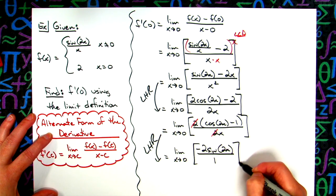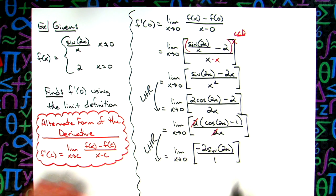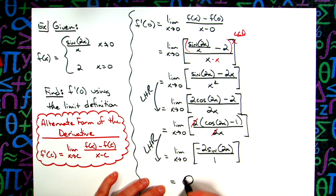And now I can do a direct substitution. When I plug in 0 here I'm going to have an overall limit of 0.